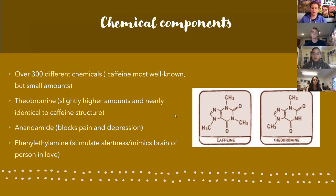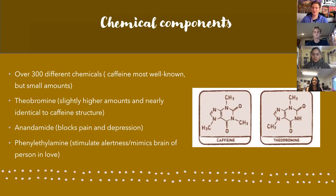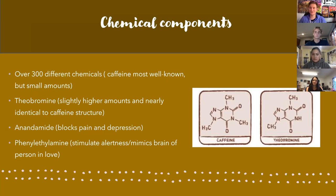Besides these two chemicals, there's also anandamide, which blocks pain and depression and is naturally produced by our brains. However, when present in chocolate, it is usually broken down very quickly — but chocolate prolongs this process, making pain and depression repressed for longer periods of time. Finally, phenylethylamine stimulates alertness and mimics the brain chemistry of a person in love, which adds to its sought-out features and makes chocolate desirable.